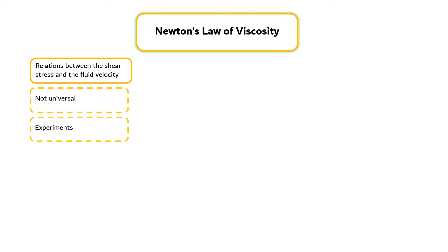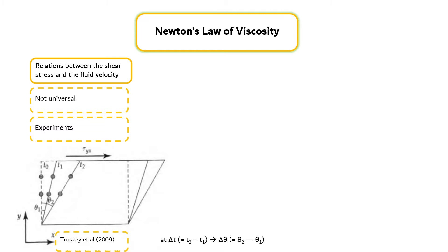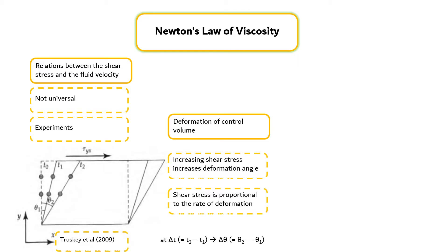The application of a shear stress to a control volume produces a deformation of the control volume, as shown in the left figure. During the time interval delta t, the angle changes by an amount delta theta. For a fixed time interval, increasing the shear stress results in an increase in the angle by which the control volume is deformed. Thus, the shear stress is proportional to the rate of deformation and not the deformation itself.